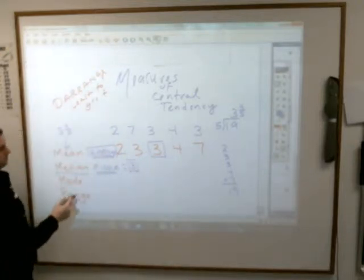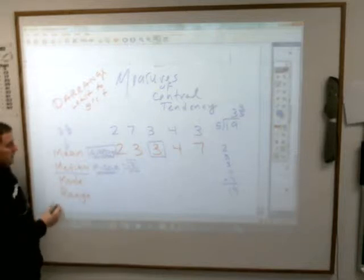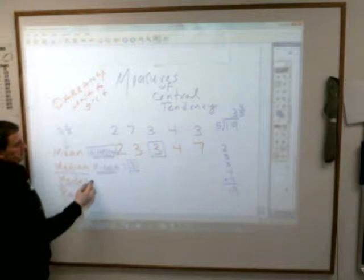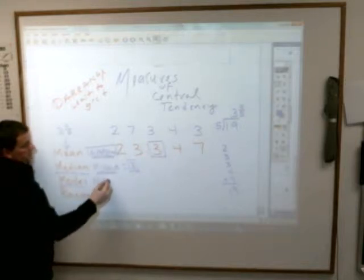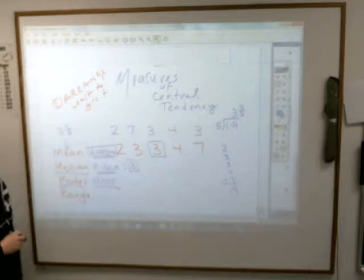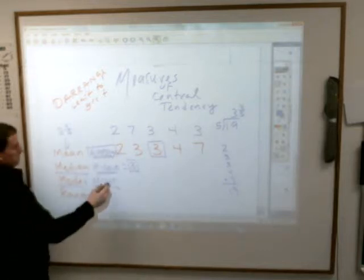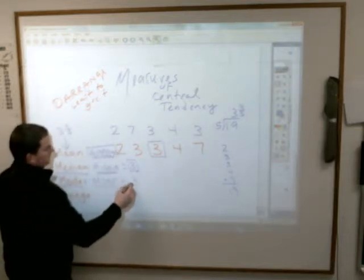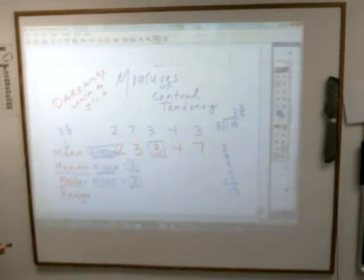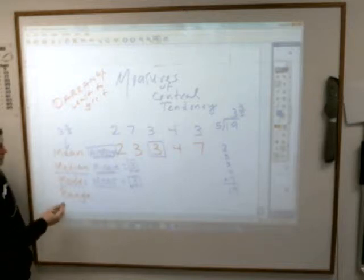How about the mode? What's the mode? Yeah, it's the number that appears the most. And in that set of data, what number is that? Three. If no number repeats, it doesn't have a mode. If more than one do, it has a bunch of modes.